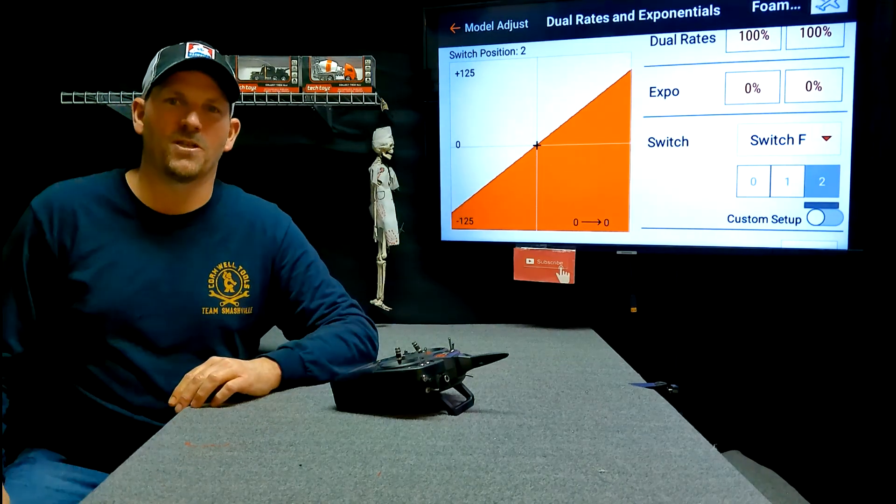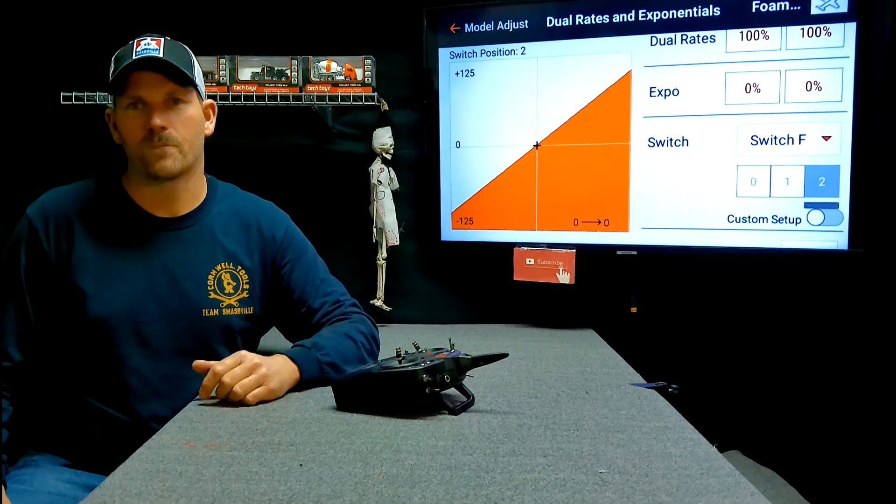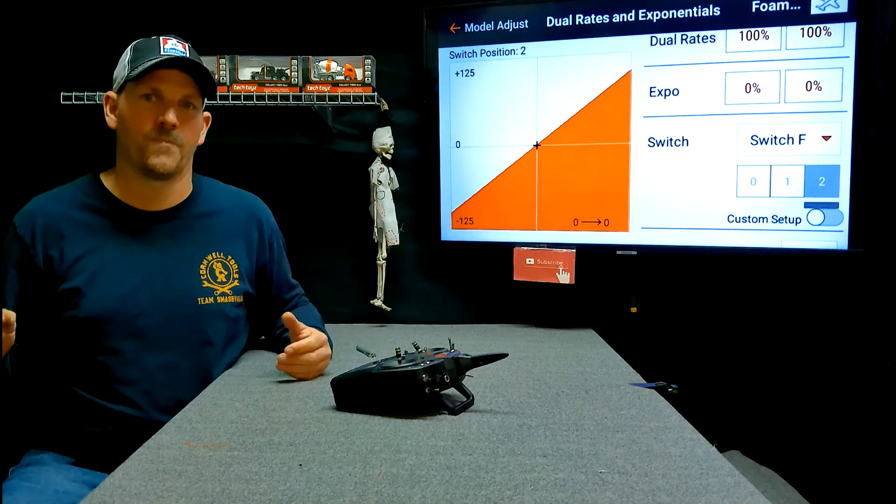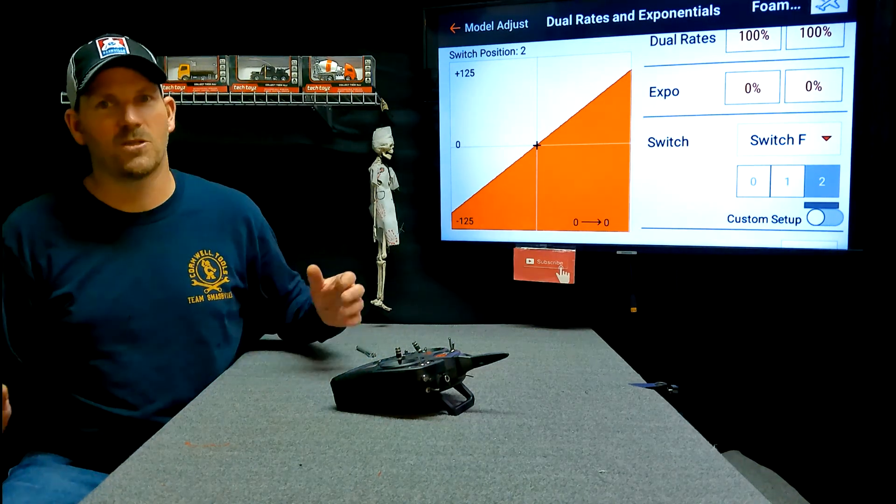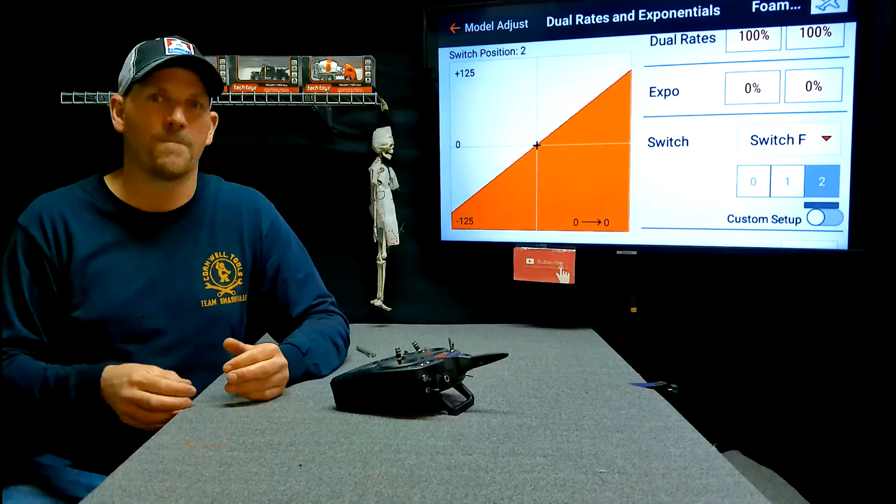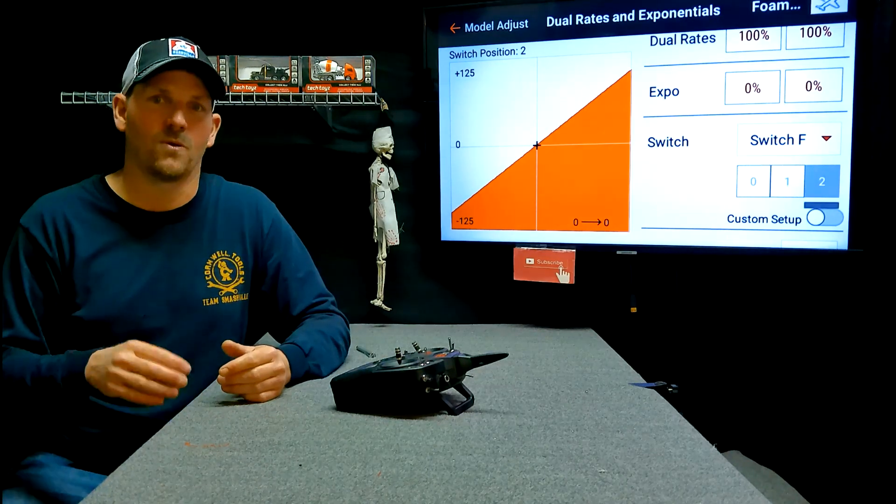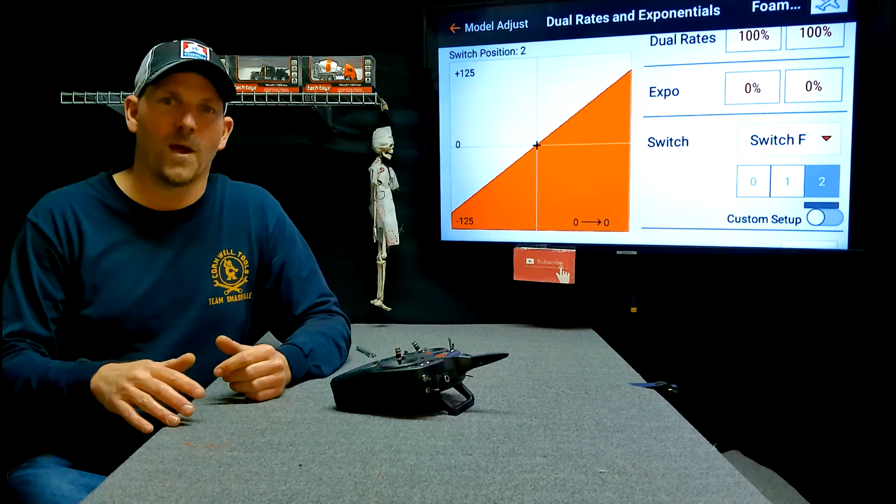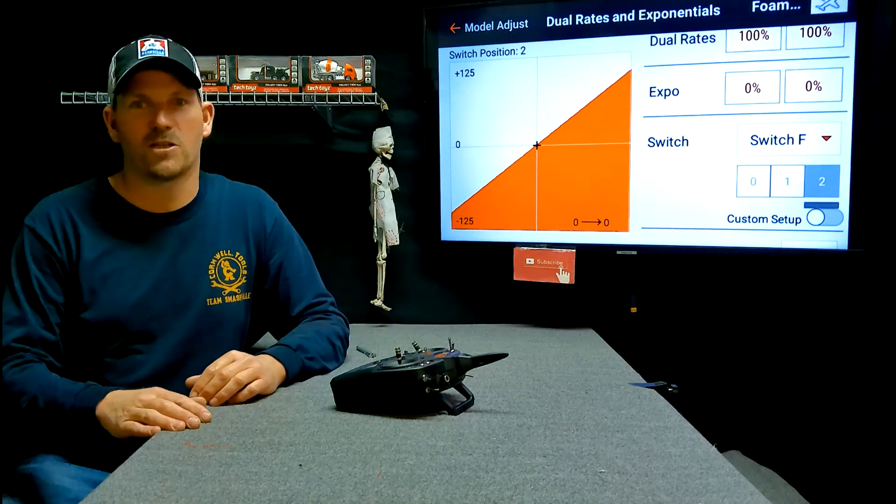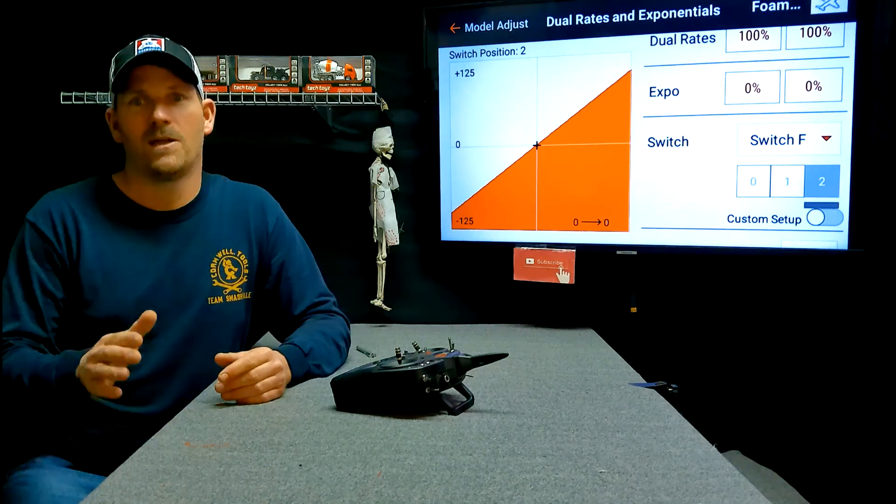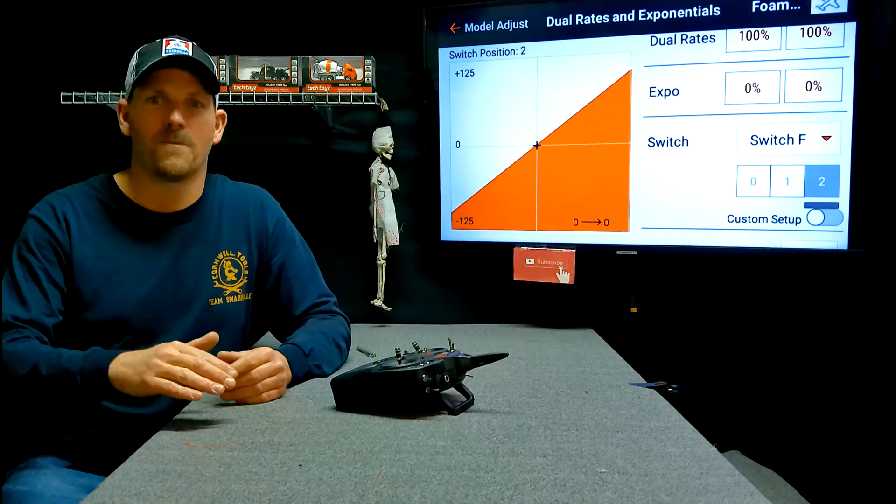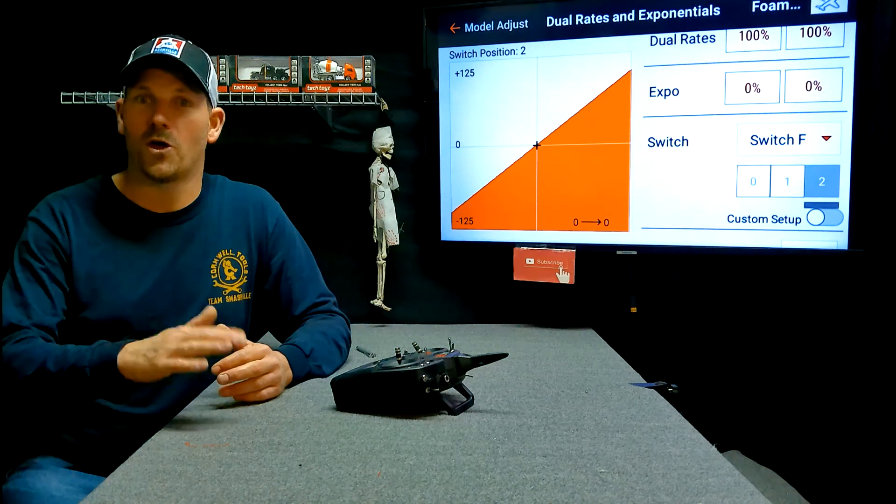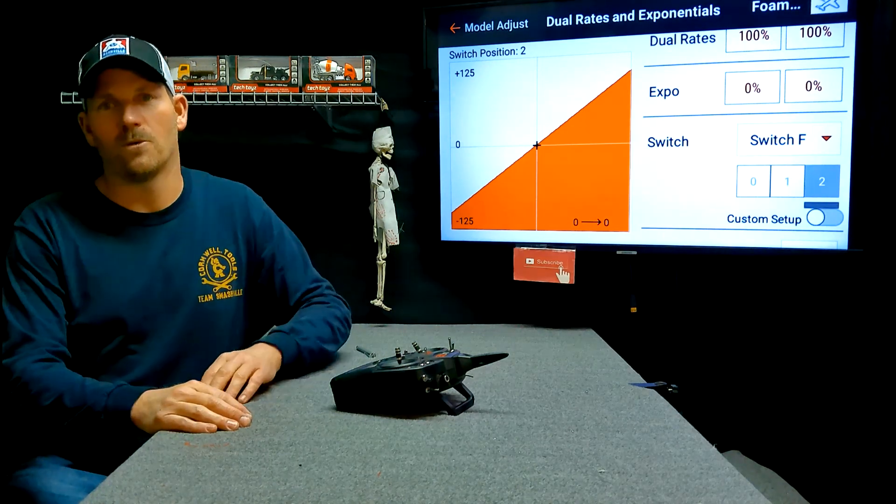I just wanted to show you guys what Expo was. I had several questions throughout the past few months about what is Expo. And a lot of people are asking what would you recommend? The setting is in your feel, in your fingertips, how you fly. A lot of the instruction manuals will recommend, especially for like 3D planes, I'm sure maybe jets too. Your low rates, maybe a lower setting of Expo, the higher rates, a higher setting. For example, the 300, 70% travel of the control service, they recommend positive 15% Expo. And then the high travel, 100% of your travel, 30% Expo.